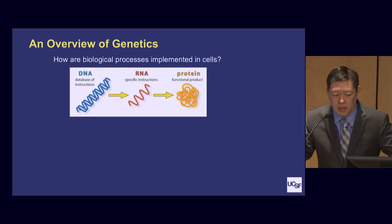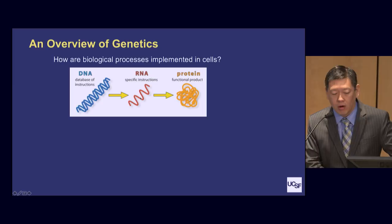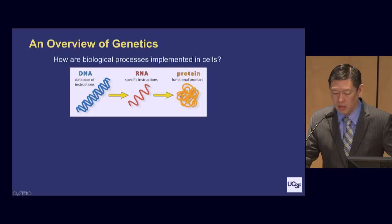It turns out that each of our cells has a genetic code in it called DNA, shown here in the blue. The DNA can be considered a database of information. That DNA is then made into something called RNA — it's called transcribed, it's transcribed into RNA. Out of this database, the specific pieces of RNA provide more specific instructions on different things that can happen.